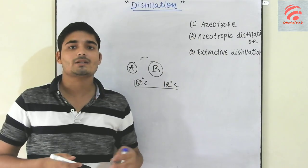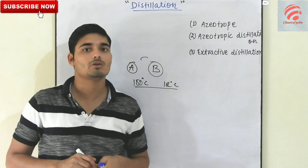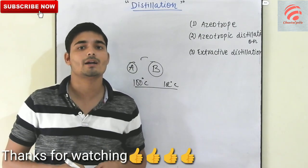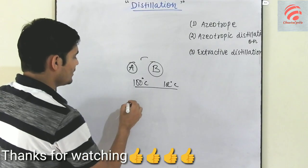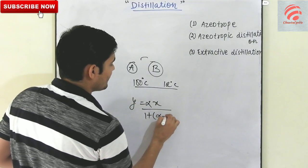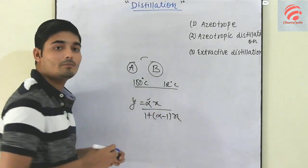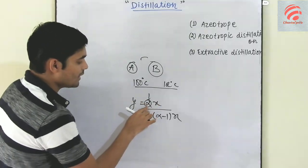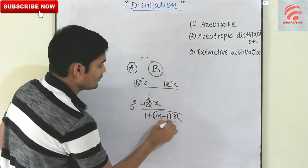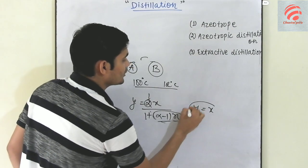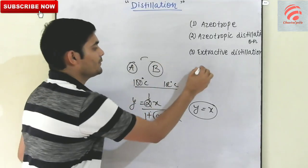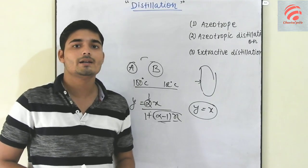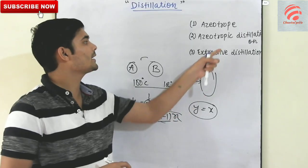Distillation now — azeotrope can be known as when the boiling point is the same. Y is equal to X. So what is this? The liquid in the fill-key distillation column, which is the liquid in the vapor column, is the same. So we can't do simple distillation. Now we will do an azeotropic distillation.